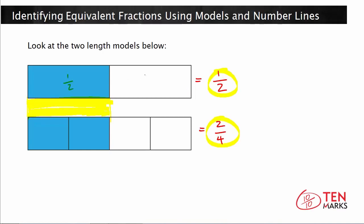In this model, each part represents one half, but in this model, each part represents one fourth. So what this means is that one half is the same thing as two of one fourth — two parts that are one fourth each, or two fourths. And this means, ultimately, one half equals two fourths. Even though the fractions one half and two fourths look different, because they have different values in the numerator and denominator, they represent the same amount, so we call them equivalent fractions.